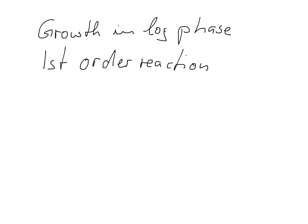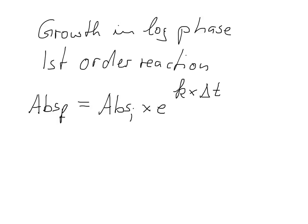Now we know that we can write a first order reaction kinetics as — in this case we call it absorbance — so absorbance F, which stands for the final absorbance that we want to achieve, equals the starting absorbance (I call it sub i for initial absorbance) times e to the power of k times the time difference between the starting point and the final point, so that would be our delta t. And this k is the rate constant.